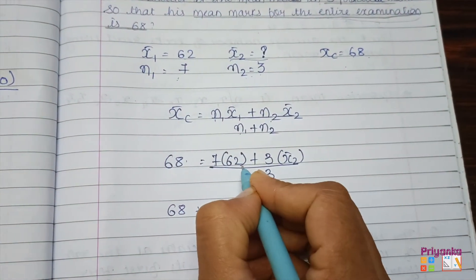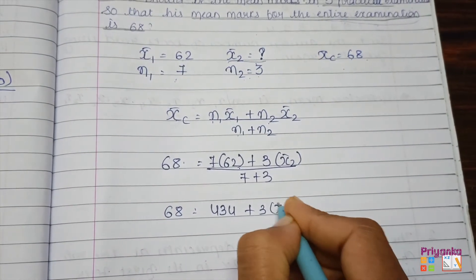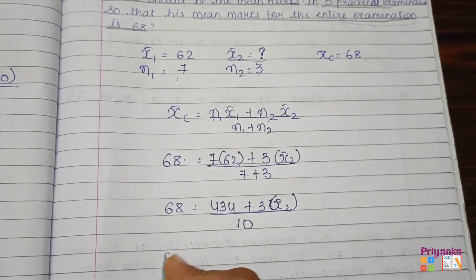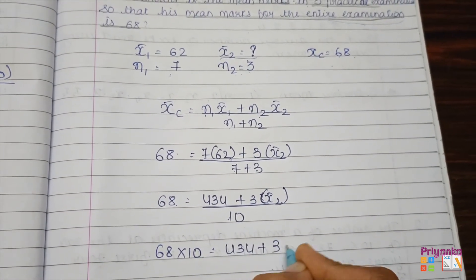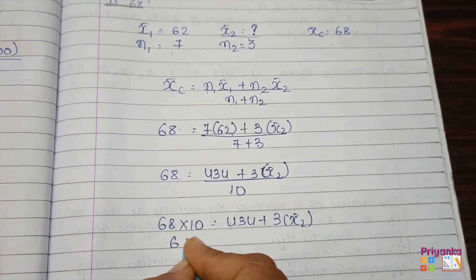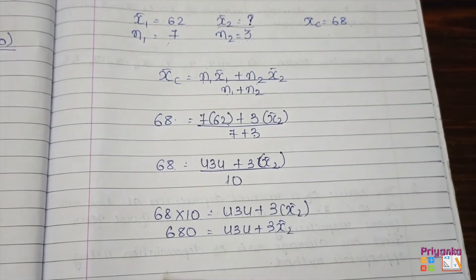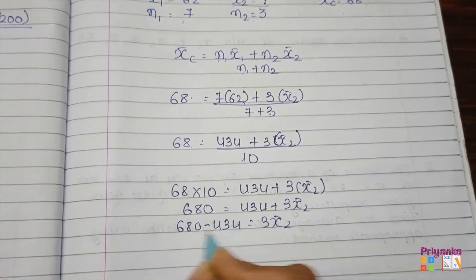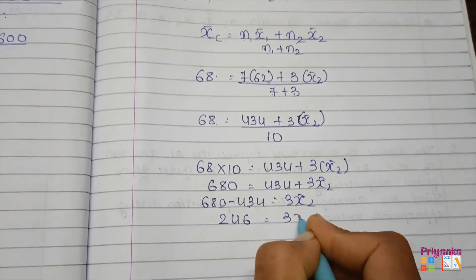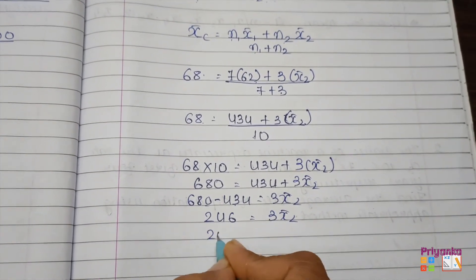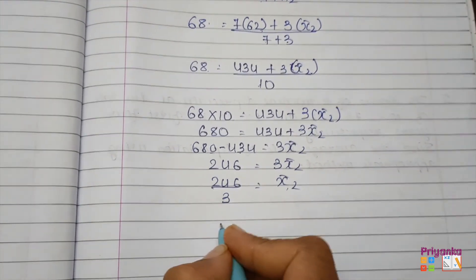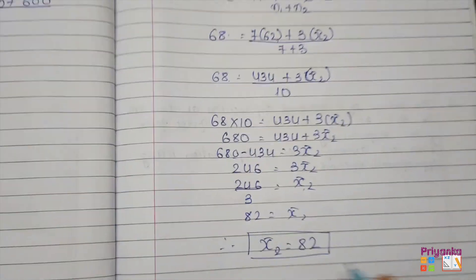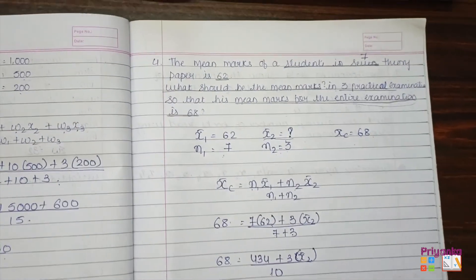Solving: 68 = (434 + 3 × mean2) / 10. Multiply both sides by 10: 680 = 434 + 3 × mean2. Subtract 434: 246 = 3 × mean2. Divide by 3: mean2 = 82. So the student should score a mean of 82 in the three practical examinations. That's how we find the missing mean, and with this we complete Exercise 3.2.